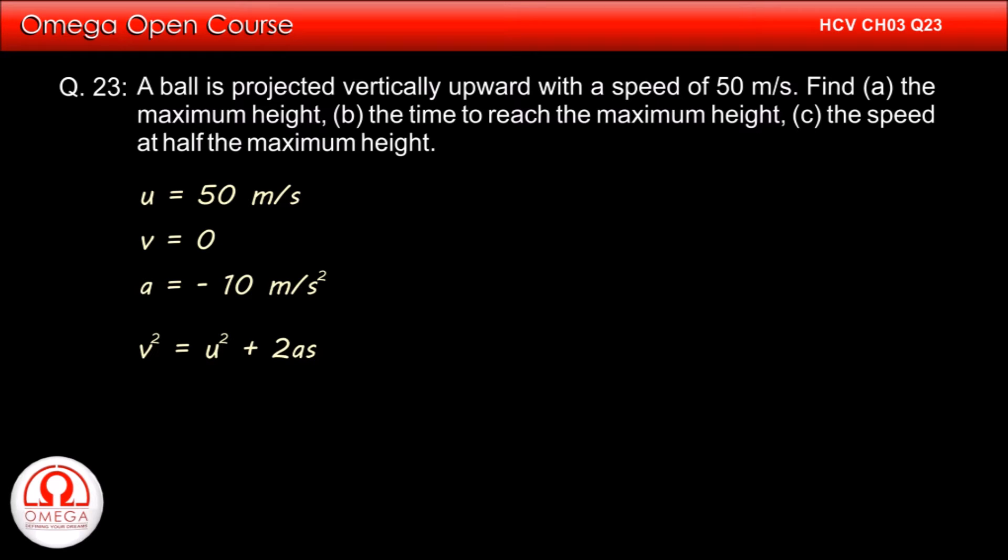From the third equation of Newton's equation of motion, we have v² = u² + 2as. Putting the values, we get 0 = u² - 2 × 10 × h. Simplifying, we get h = 125 meters. This is the answer to part A of the question.